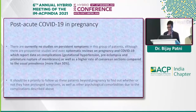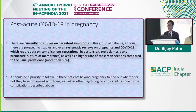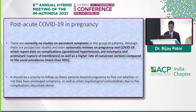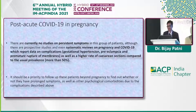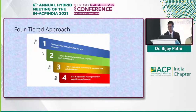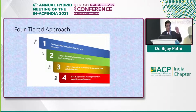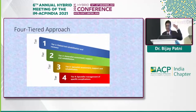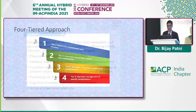Post-acute COVID-19 in pregnancy is supported by reviews indicating complications including gestational hypertension, preeclampsia, premature rupture of membranes, and a cesarean section rate increase of more than 50%. A four-tiered management approach is recommended: patient-led rehabilitation and recovery, generalistic assessment and rehabilitation, specialist assessment and rehabilitation, and specialist management of specific complications — starting from primary care and progressing to specialist care with assessment at every tier.